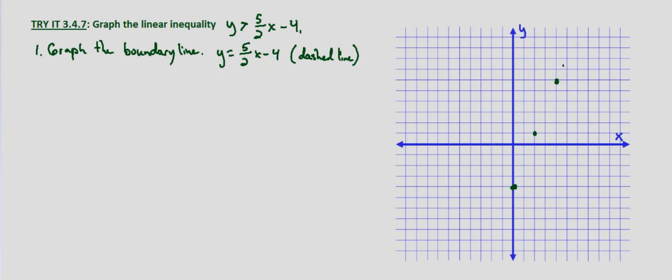And then we simply graph, draw in our line, which again is going to be dashed because it's a non-inclusive inequality.